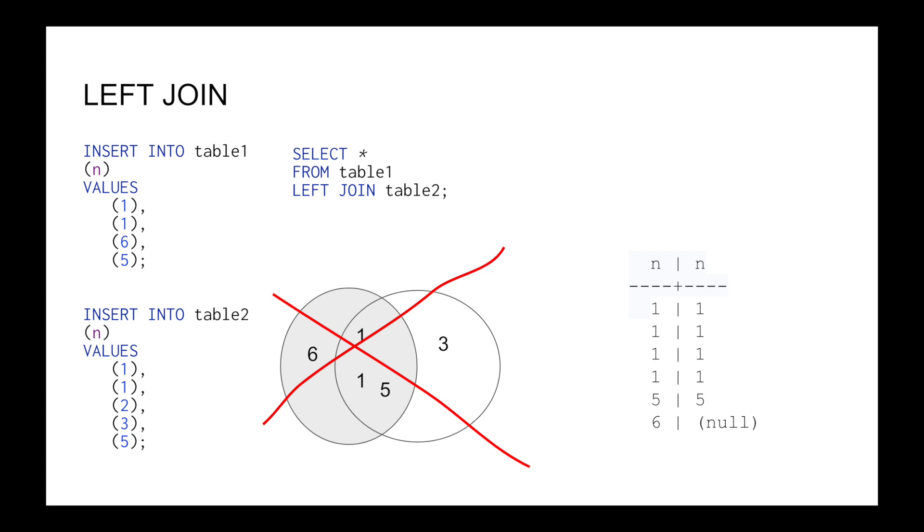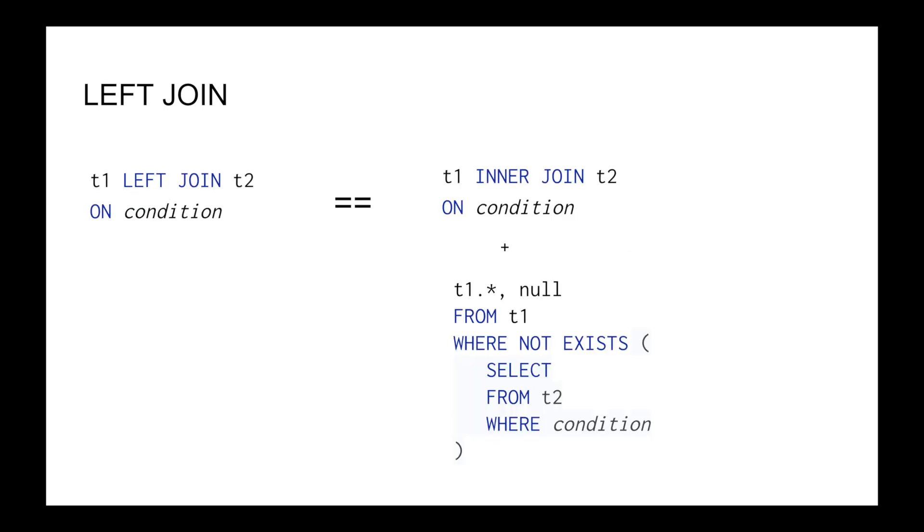So what is left join? Left join is the same as inner join, plus rows from the left table for which nothing matched in the right table according to the filter.